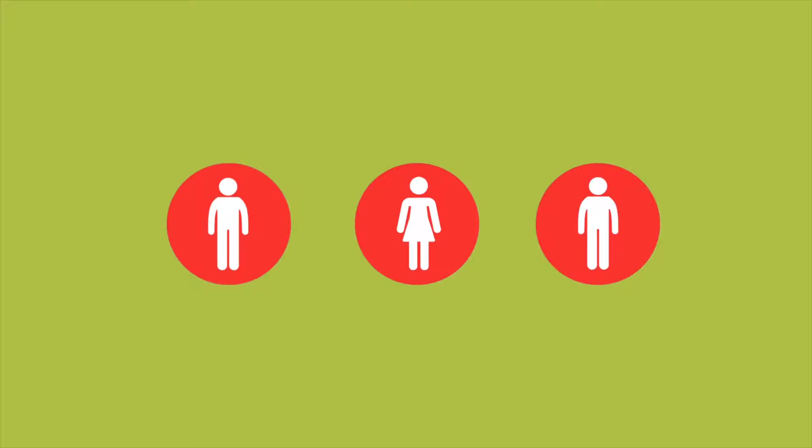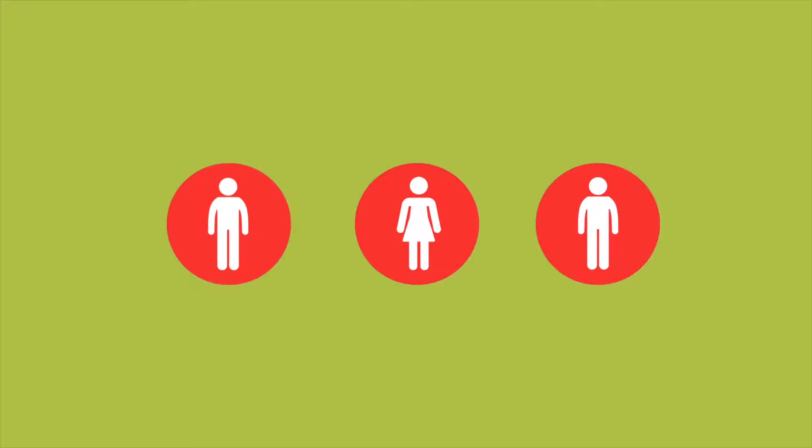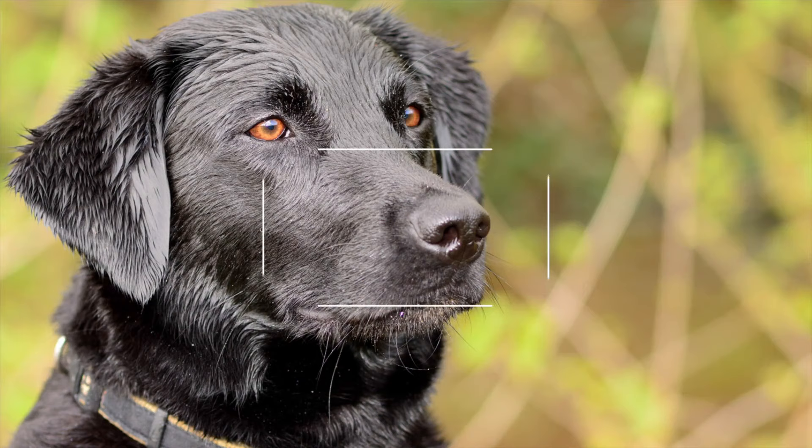Artists have been using the rule of thirds for centuries, because things that come in threes just work — three characters create conflict, three acts complete a play. We see the rule of thirds in oratory, architecture, and advertising.